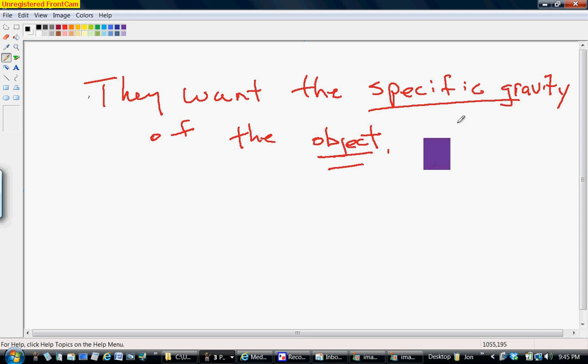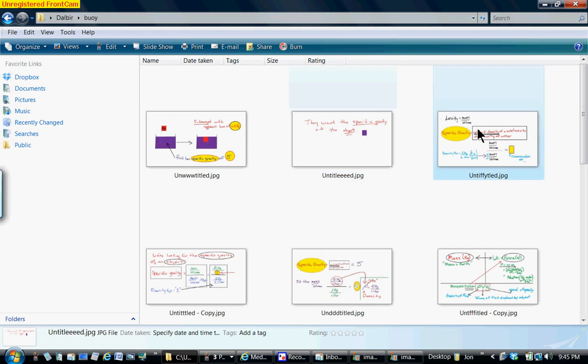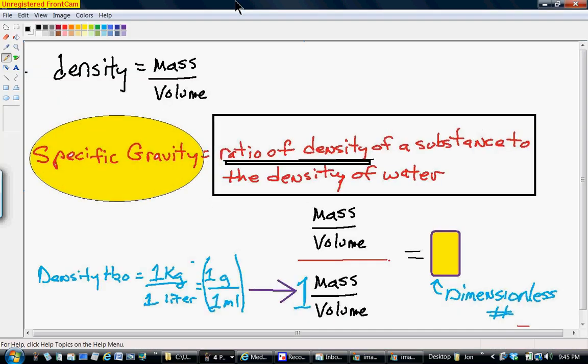The next thing we need to do is define what specific gravity is. Specific gravity is the ratio of density of a substance to a reference substance, and that's usually water. So we've got a ratio of two densities. And density is equal to mass per volume.